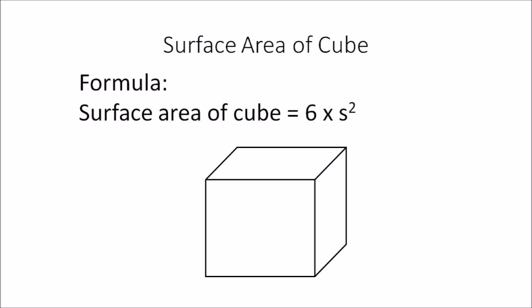That leads us to the formula we can use to calculate the surface area of a cube, which is equal to 6 multiplied by s squared. The 6 is used because a cube has 6 faces in total, and 's' denotes one of the side lengths of the cube.